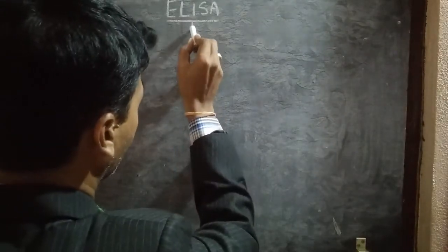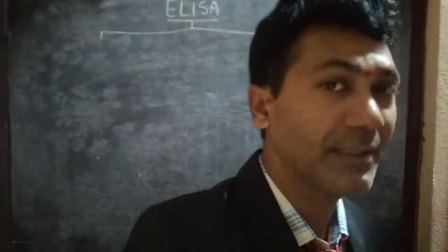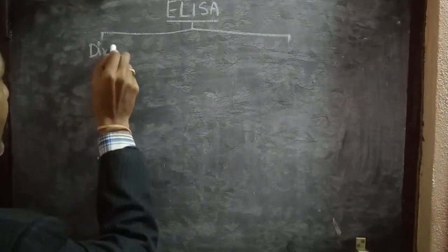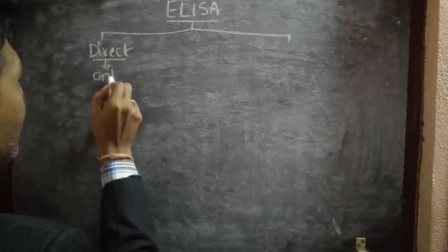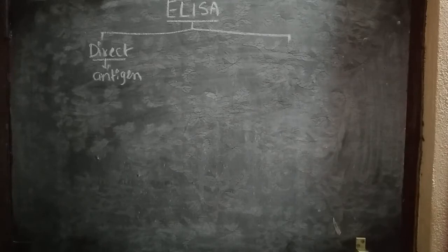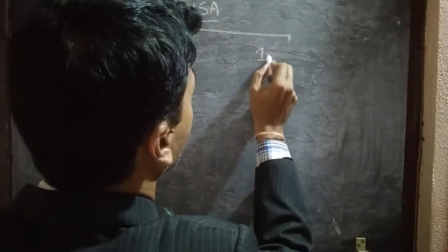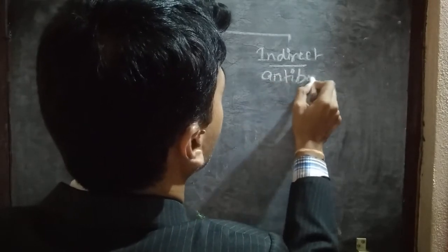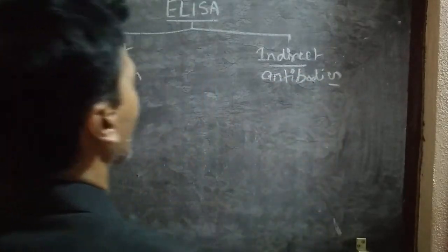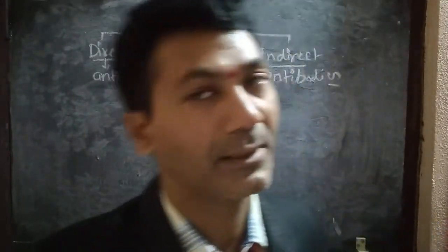This test is used for two purposes. One is if this test is performed for identifying the antigens, then it is said to be direct ELISA. Direct ELISA's main intention is to identify the type of antigen found in the body fluids. Another one is indirect ELISA, in which based on antibodies we recognize the particular disease. Indirect ELISA is performed to detect the antibodies found in our body fluids.